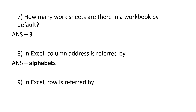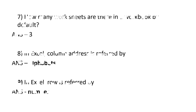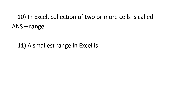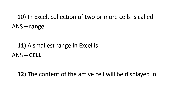In Excel, row is referred by numbers. In Excel, collection of two or more cells is called a range. A smallest range in Excel is a cell. The content of the active cell will be displayed in a formula bar.